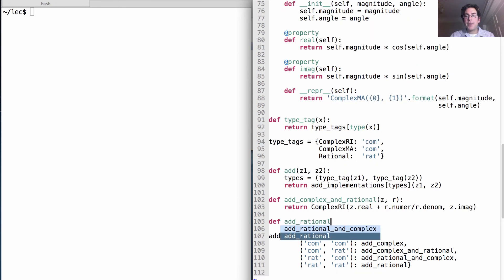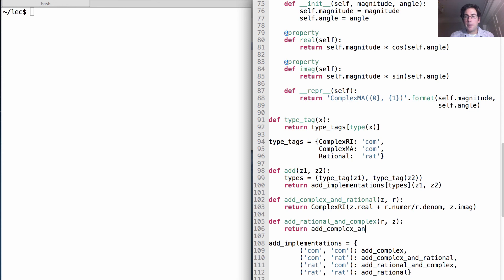And then how will we add rational and complex? Well, that's straightforward. We can just return add_complex_and_rational on z and r.